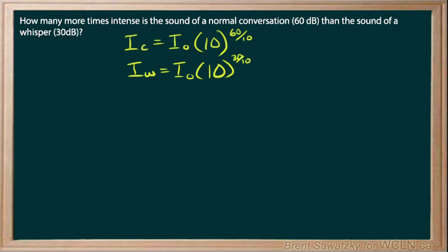So now what we're asked for is how many more times intense is the normal conversation. So we want the conversation on top and the whisper on the bottom, and so we'll fill in our equations for those.